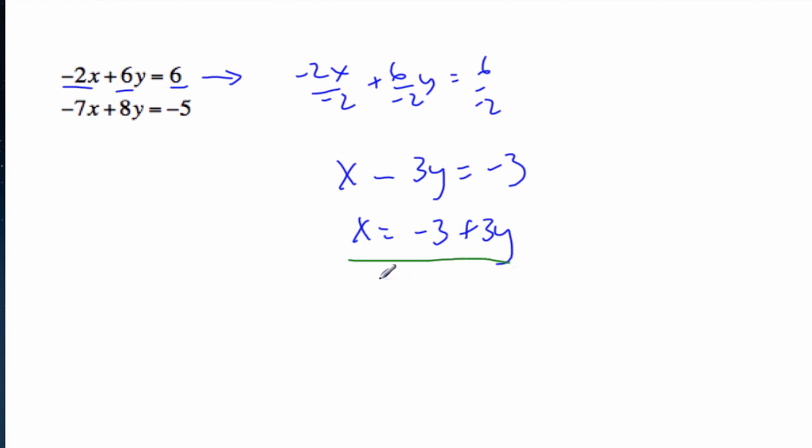Now we've got to substitute into the second equation, but at least we don't have any crazy fractions now. Right. So I get negative 7. My x value is minus 3 plus 3y. That's what x equals. Plus 8y equals minus 5. So again, distribute. So I get 21 minus 21y plus 8y is equal to negative 5.